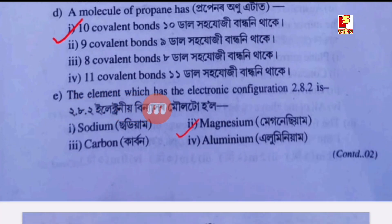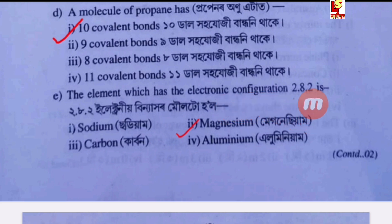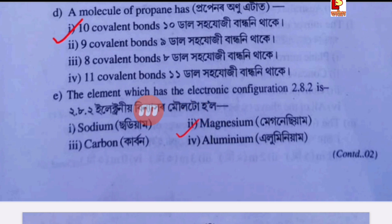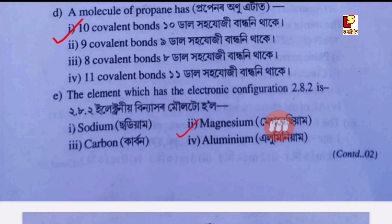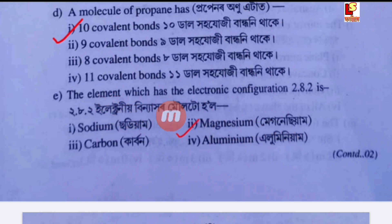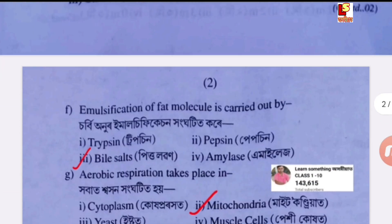Next question: the element which has the electronic configuration 2, 8, 2 is — Option B: magnesium. Option C: carbon. Option D: aluminium.